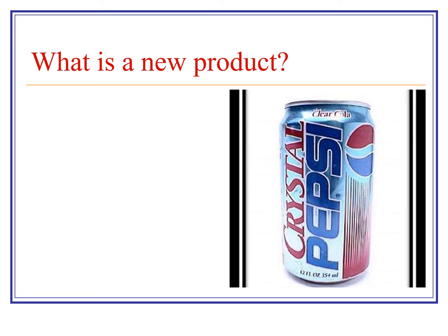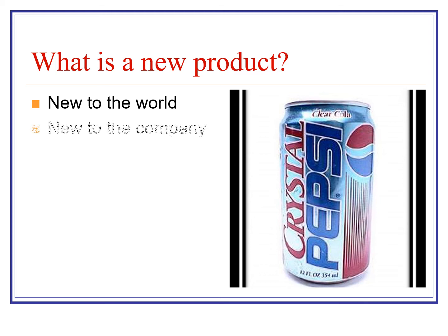What is a new product? It's quite subtle. First, you could have new-to-the-world products — something like the internet that transforms everything: streaming music, streaming TV, something we've never seen before. Those are few and far between. You'll also get products that are new to the company — a company might be thinking let's move into a different area. It's not new to the world, but they get into it. Many companies are trying to get into streaming, for example — Disney has set up their own channel.